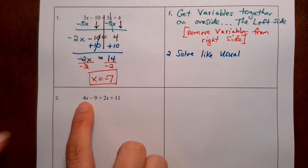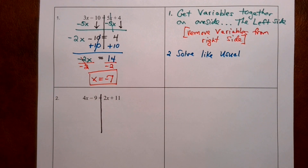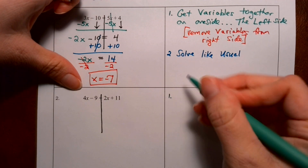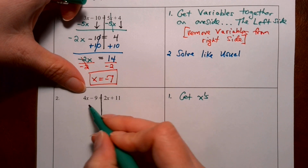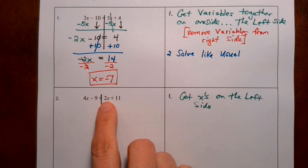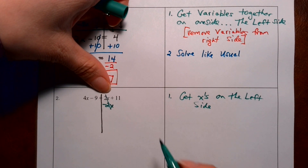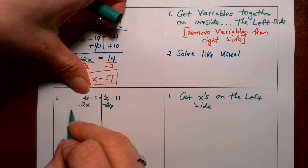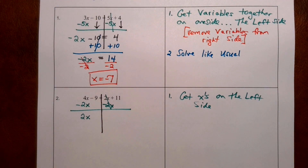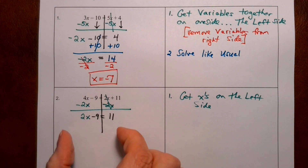For this equation, I'm noticing that there are x's on both sides. First, I'll build my wall so I can clearly see the left side and the right side. Remember, what you do to the left side you must do to the right side. So the first thing I'm going to do is get the variables on the left side. These x's on the right — I need to eliminate them by subtracting 2x from the right, which makes them cancel. 4x minus 2x are like terms, and that makes 2x. We still have minus 9 on the left and positive 11 on the right. Now we just have a multi-step equation.